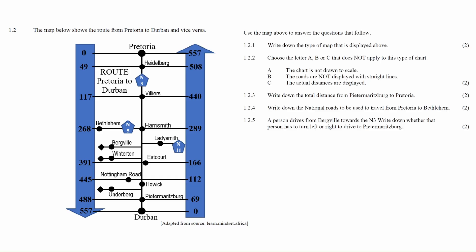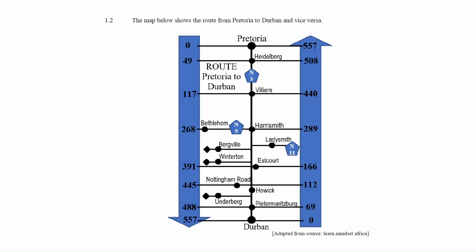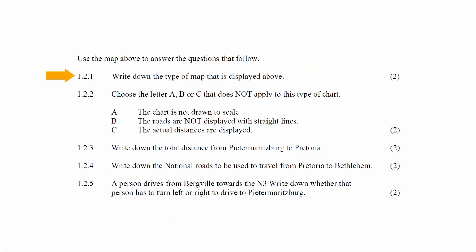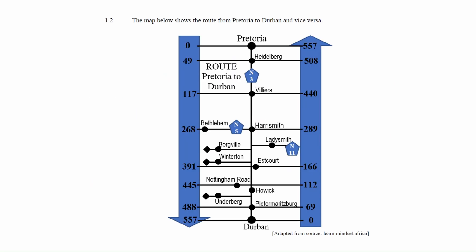Question 1.2 consists of five questions related to maps and plans, specifically designed to evaluate your understanding of strip charts and map directions. You are provided with a strip chart that shows the route from Durban to Pretoria via the N3. The total distance of this route, which is 557 kilometers, is indicated on the chart. Along the N3 you will notice branches in the road that lead to various towns. In question 1.2.1 you have to write down the type of map displayed here, which is called a strip chart.